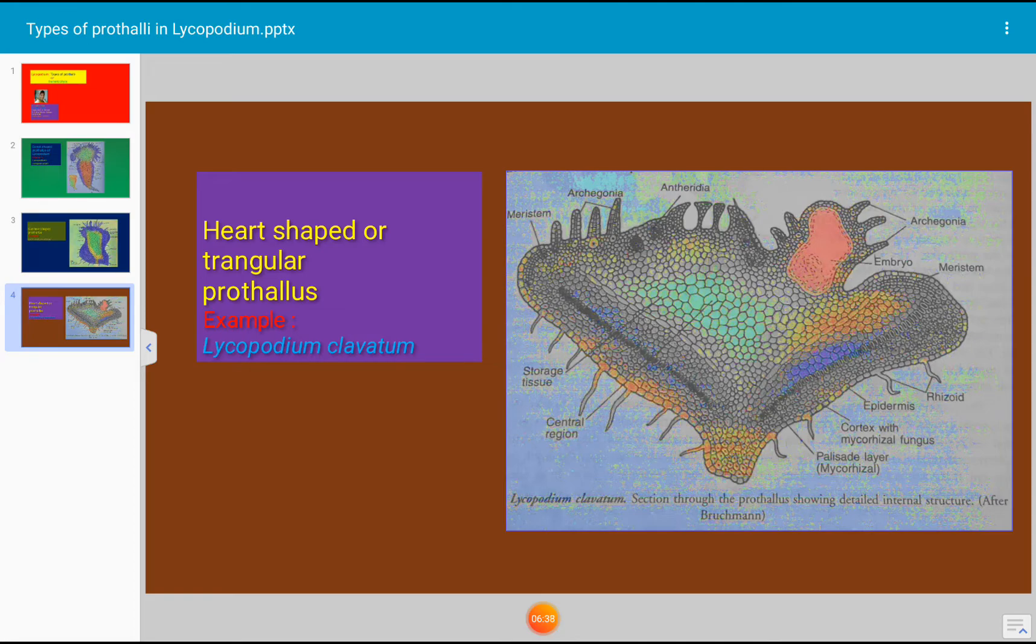Let us see the detailed structure of archegonium or female gamete. The portion of mature archegonium that is derived from the primary cover cell, together with the neck canal cell, neck, projects above the prothallus. The remaining canal cells and egg nucleus are embedded within the prothallus. The cells lateral to the egg and lower portion of the row of neck canal cells are not portions of the archegonium, as they are formed by the division and redivision of prothallus cells immediately adjacent to the archegonium initial.